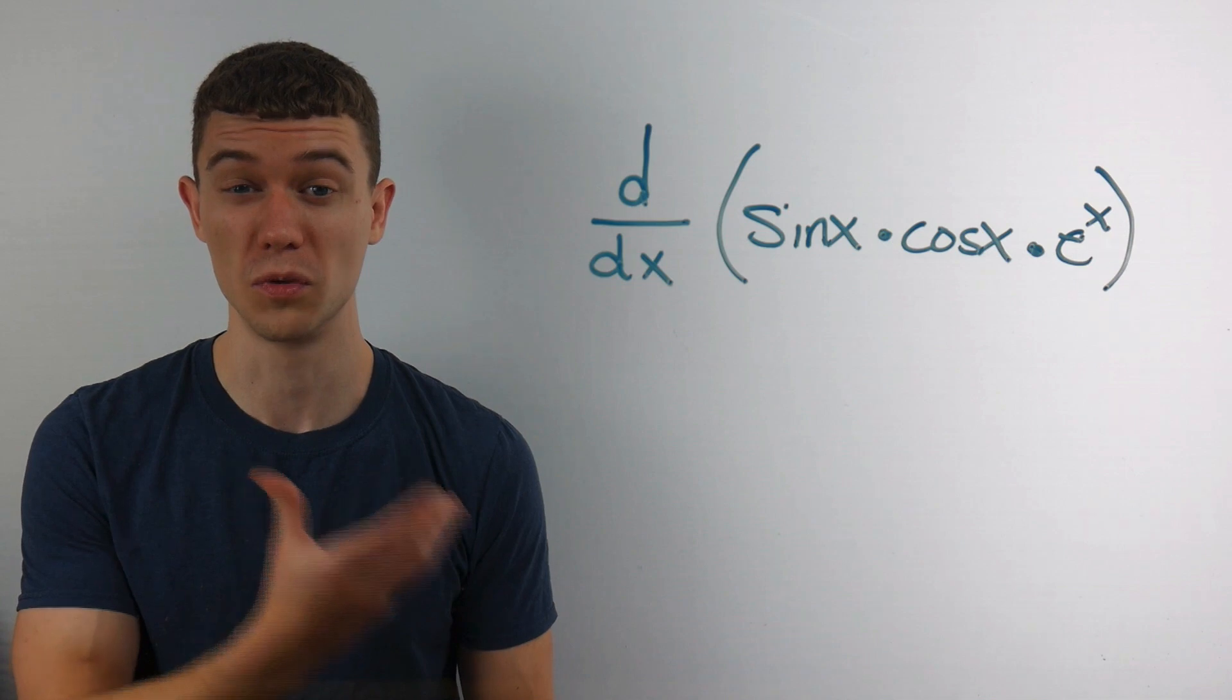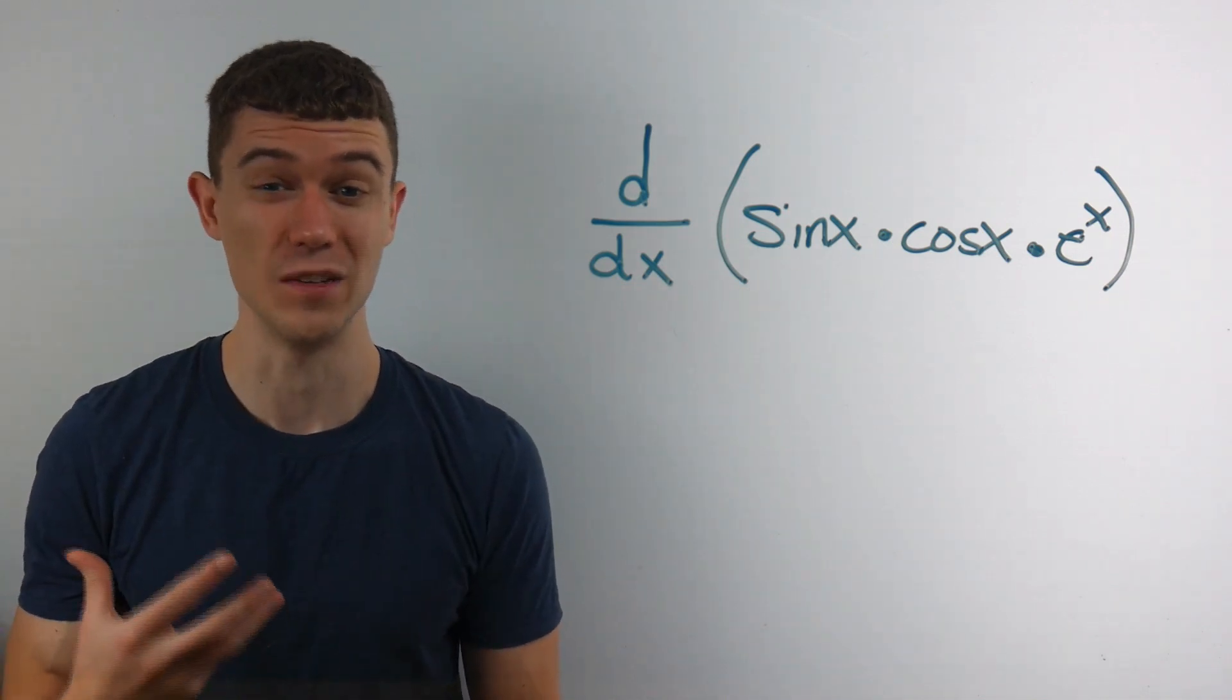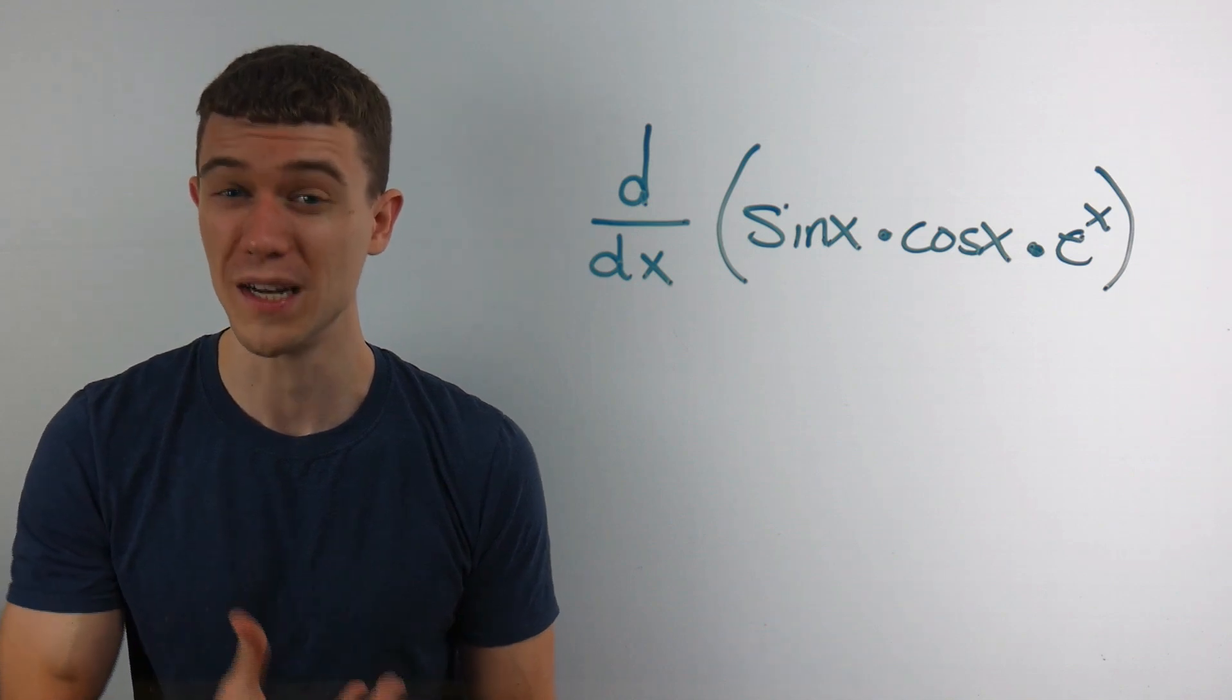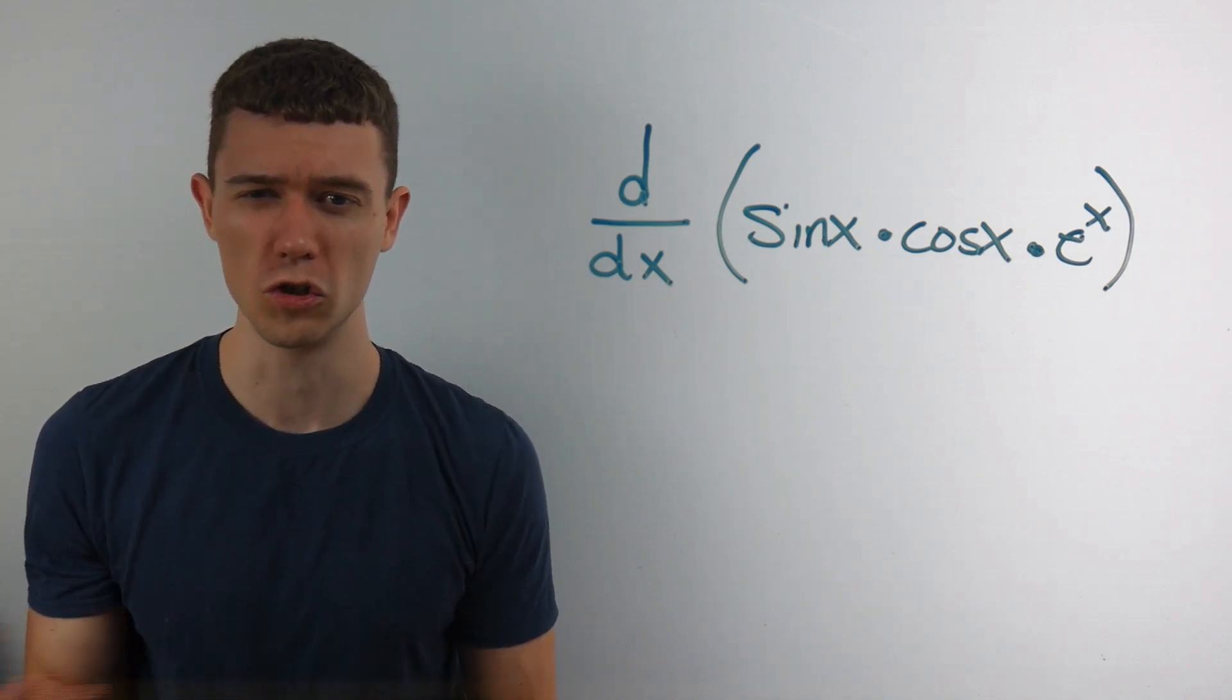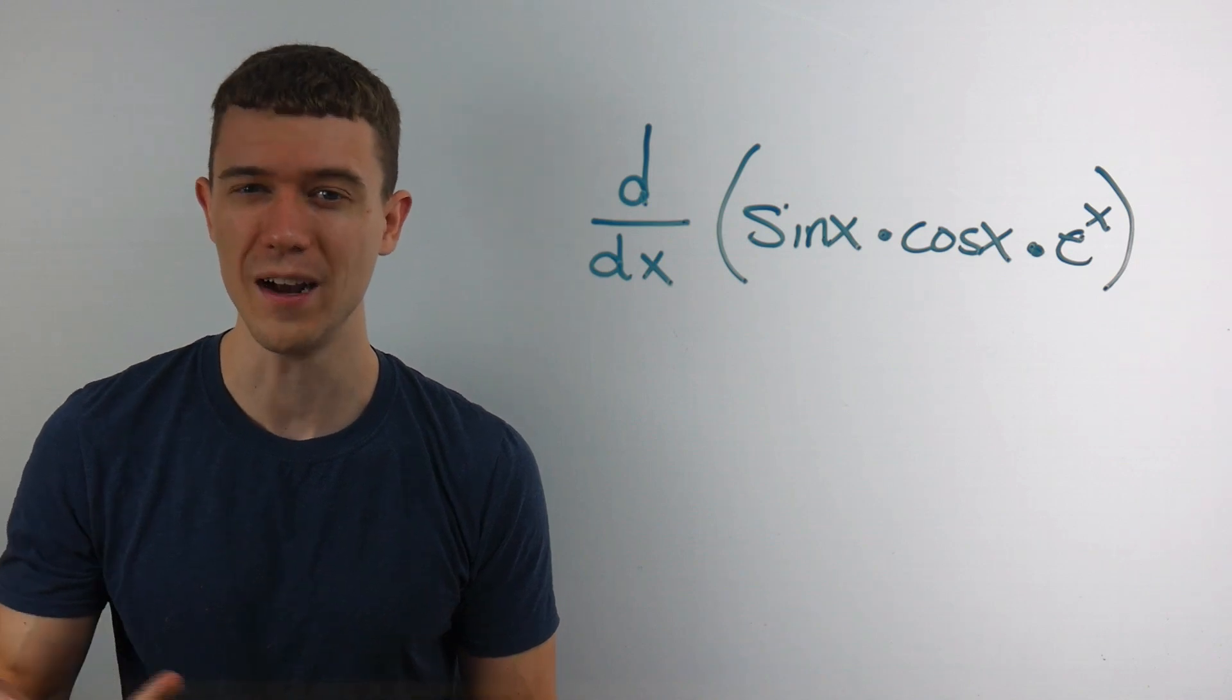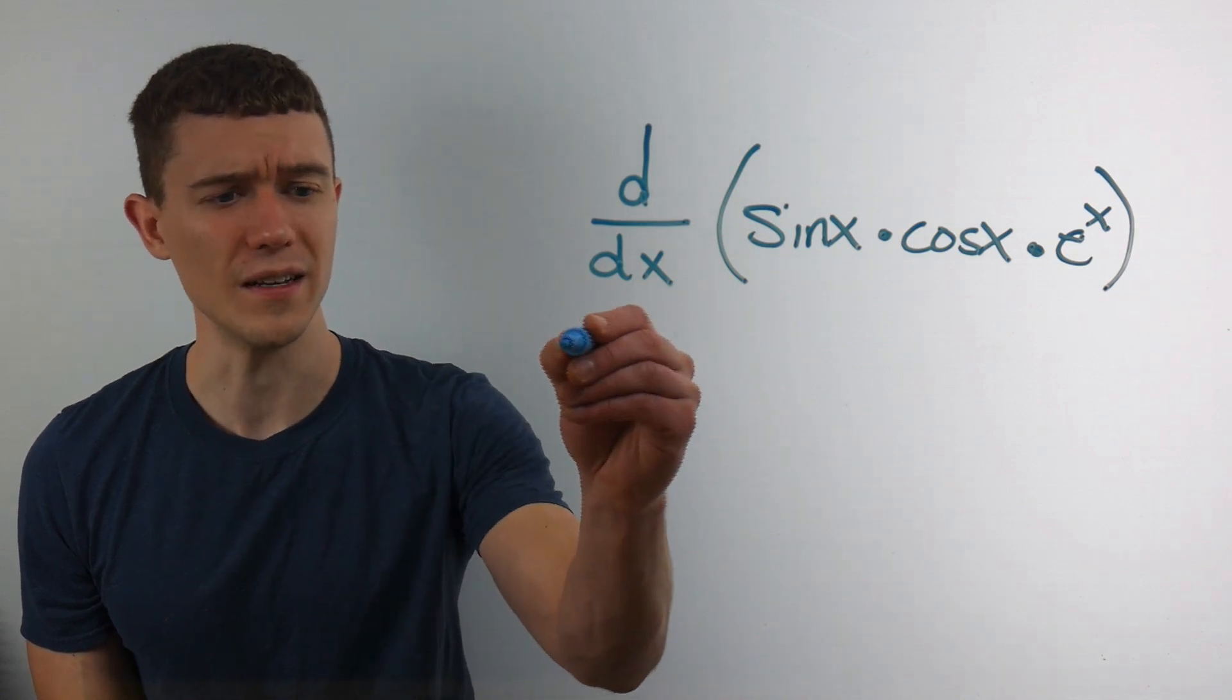You can do the product rule twice, just pretending that sine times cosine is one function. And then when you take the derivative of that, you'd have to use the product rule. In this video, I'm just going to show you the triple product rule. It's kind of just the natural extension of what you would expect the product rule to be. It goes like this.